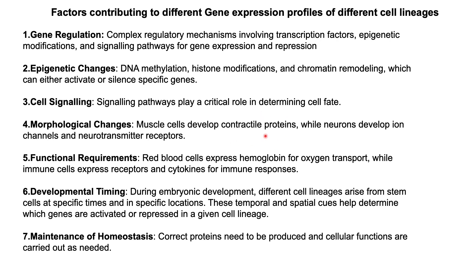Next are morphological changes. As cells differentiate into specialized cell types, they often undergo structural and morphological changes accompanied by changes in gene expression. For example, muscle cells develop contractile proteins while neurons develop ion channels and neurotransmitter receptors. Different cell types also have unique functions, and gene expression profiles are tailored to meet these functional requirements — for example, red blood cells express hemoglobin for oxygen transport while immune cells express receptors and cytokines for immune responses.